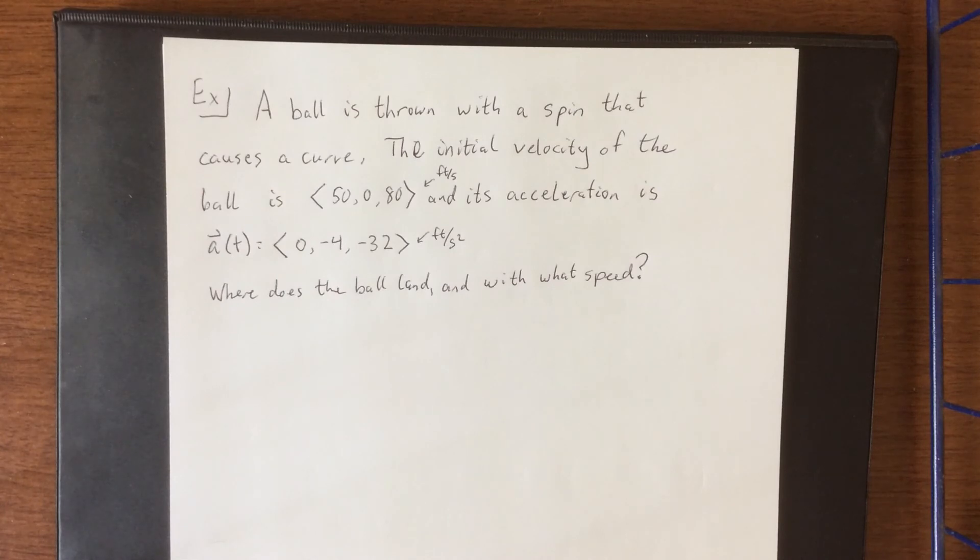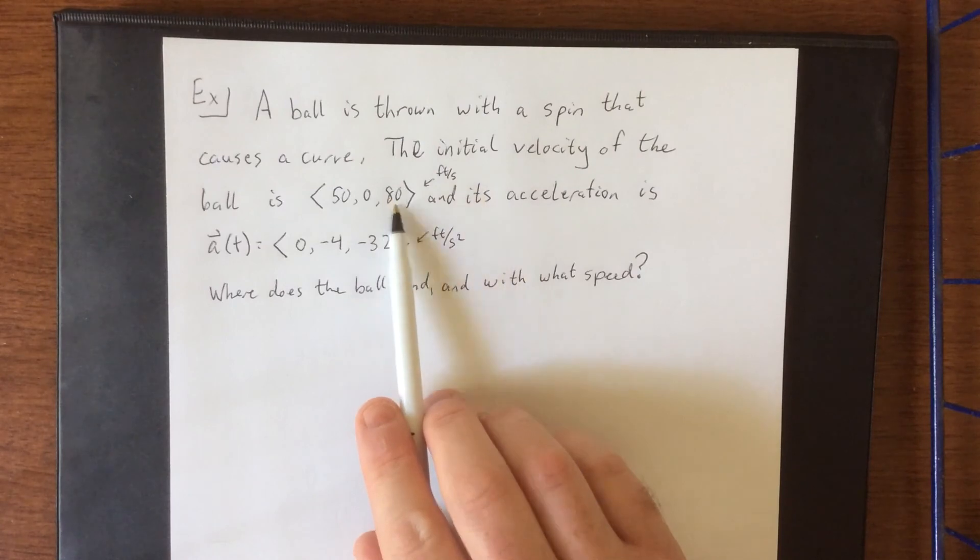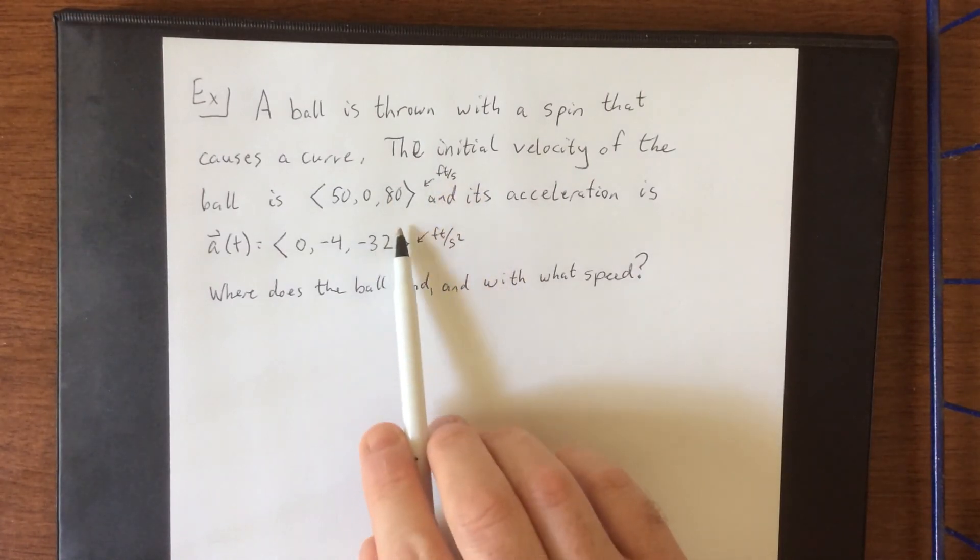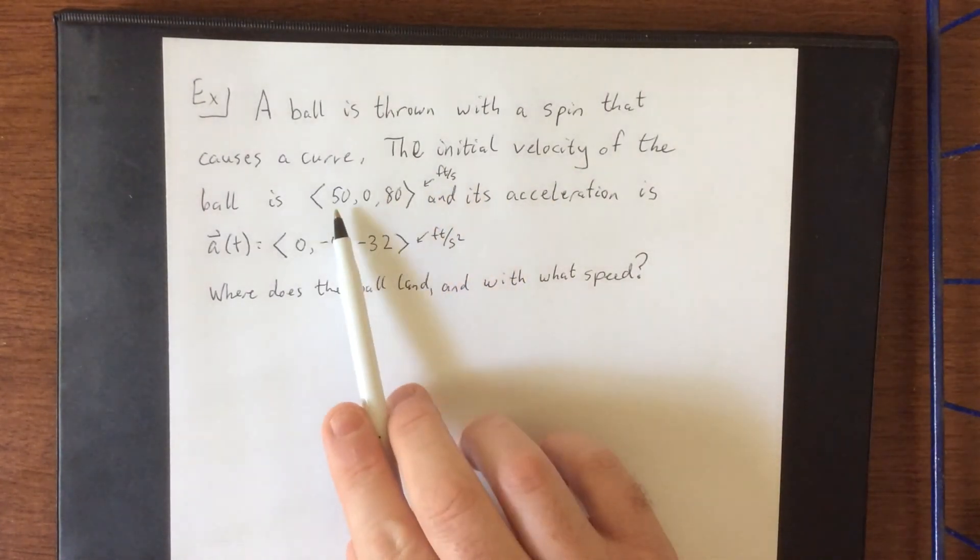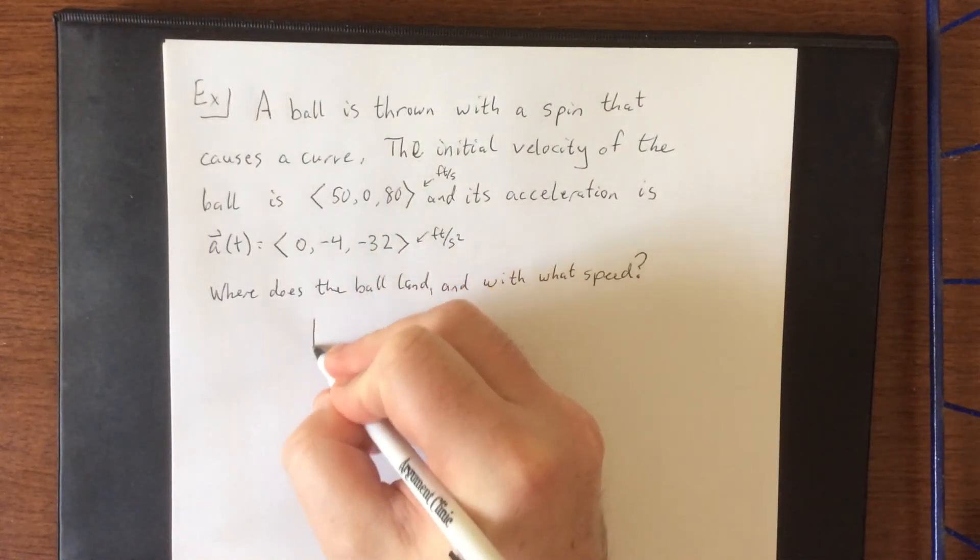Suppose that a ball is thrown with a certain spin on it that causes a curve. The initial velocity of the ball is given by the vector <50, 0, 80>. So essentially 80 feet per second in the upward direction, the z direction, and then 50 feet per second in, let's call that the east direction.